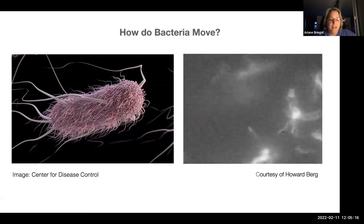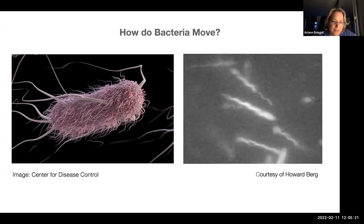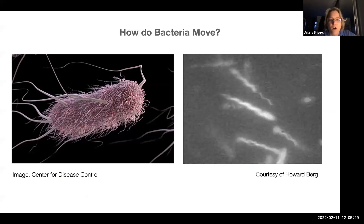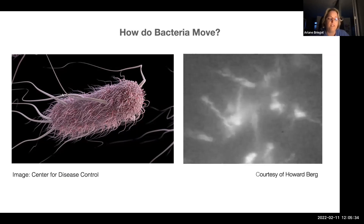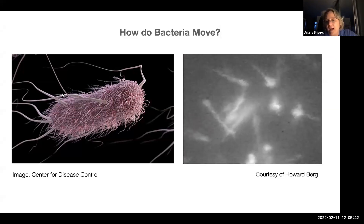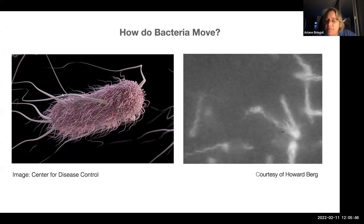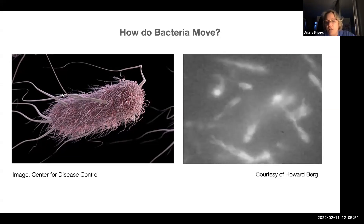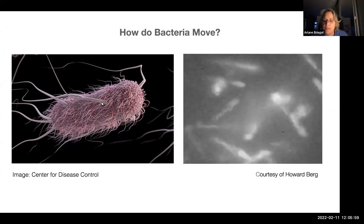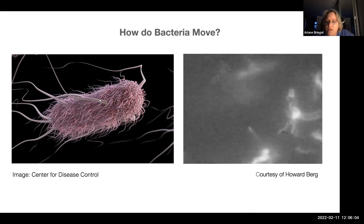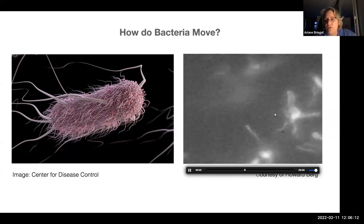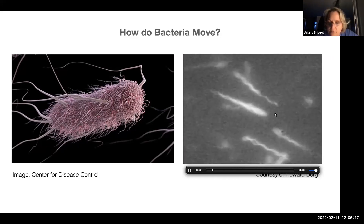E. coli is a rod-shaped cell with about seven to ten flagella arranged over its cell body. Bacteria swim by rotating these flagella. When all flagella rotate counterclockwise, they form one large super-bundle that propels cells forward in smooth swimming. When one or more flagella start turning clockwise, the cells stop and tumble. To move toward food or away from toxins, cells control the duration and frequency of these run-and-tumble phases.